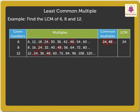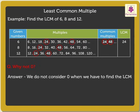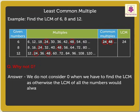Now, kids, I am sure all of you must be wondering why we did not list 0 as a multiple for any of the numbers. That is because we do not consider 0 when we have to find the LCM as otherwise, the LCM of all the numbers would always be 0.